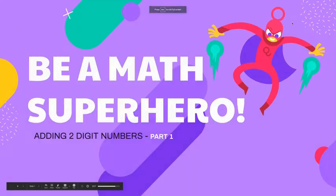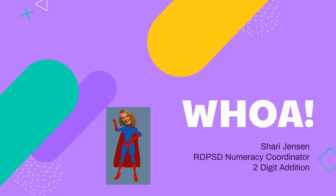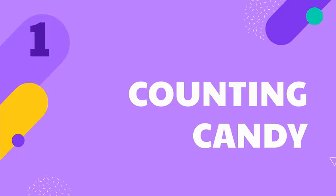Welcome back Red Deer mathematicians and my little superheroes. We are going to do part two of adding two-digit numbers. I'm Sherry Jensen. I'm back with you to do this second lesson and we're going to do our first example. To start with, what we're going to do is count some smarties.